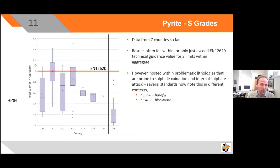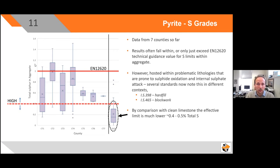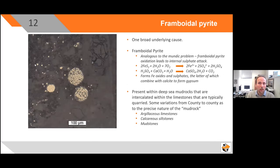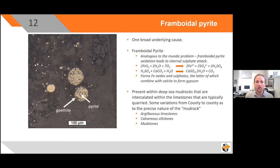The furthest to the right is the grey limestone GLS — the negligible, very-low-risk limestone also commonly in use across these southern counties. When framboidal pyrite is present within problematic lithologies, you can effectively work to a much lower allowable total sulfur — something more like 0.4–0.5%. One broad underlying cause is framboidal pyrite: nano clusters of pyrite oxidised on the outer rim, reacting to form sulphuric acid, which then reacts with the carbonate within the limestone to form gypsum. Gypsum is an expansive sulphate when it forms, leading to cracking in concrete block work and hardfill.